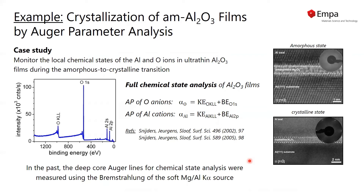In the past, we performed a case study using non-monochromatic radiation of the amorphous-to-crystalline transition of thin oxide films on aluminum substrates by monitoring the Auger parameter of the oxygen anions,